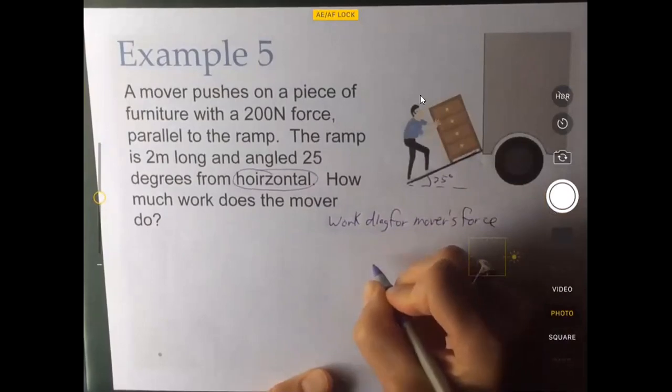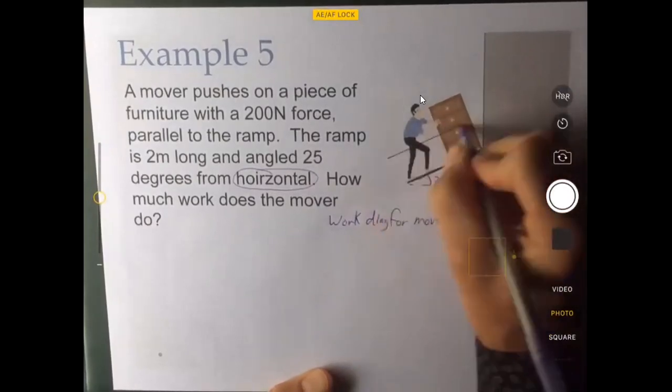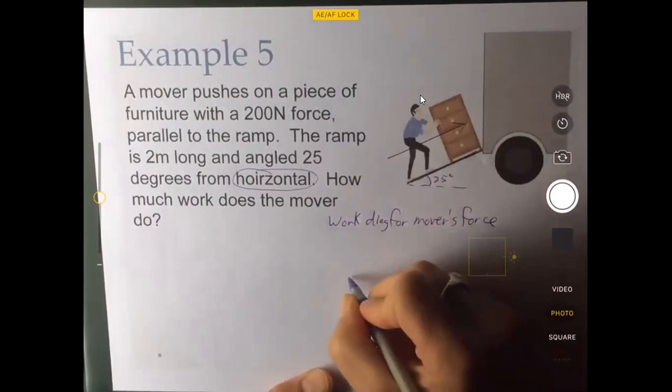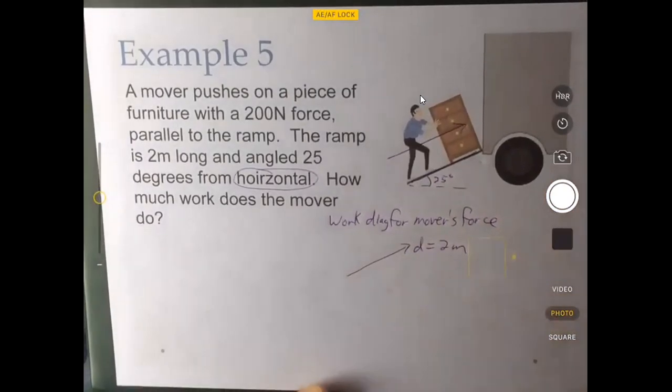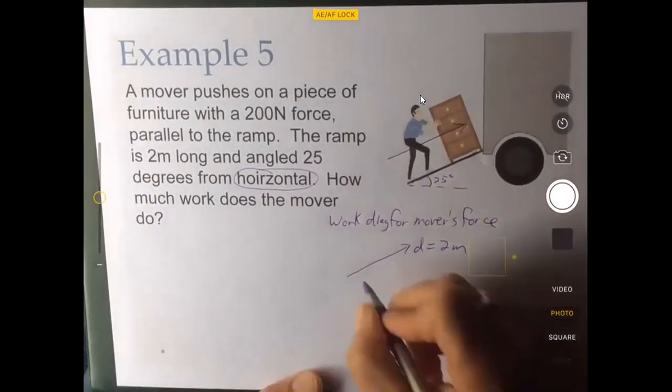So we start by drawing the displacement. Which way is the piece of furniture going to move? It's going to move up the ramp like that. So we draw that in. The displacement is two meters. And which way does the person push? He pushes this way.